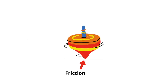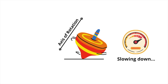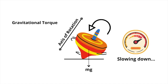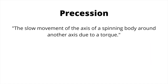Due to friction slowing down the top, the axial rotation tilts. And with the influence of gravity, gravity makes the top spin about another axis. That's called gravitational torque. Gravitational torque causes precession. Precession, in simple words, is because of gravitational torque, along with friction, the top is spinning about another axis, slowing down and eventually coming to a stop.